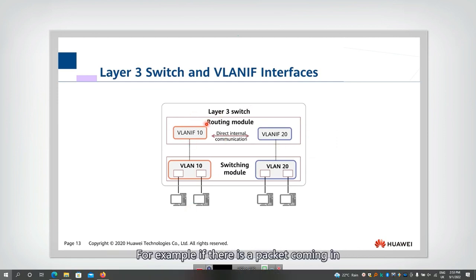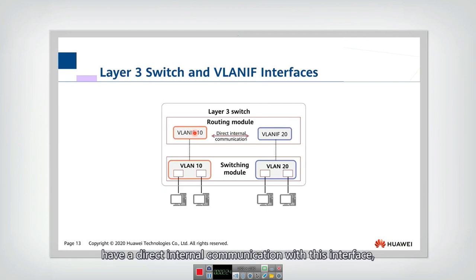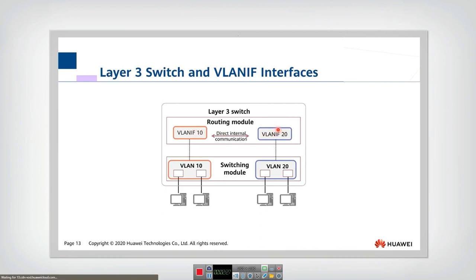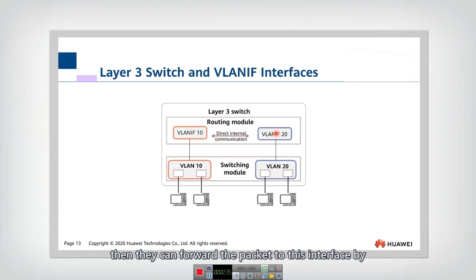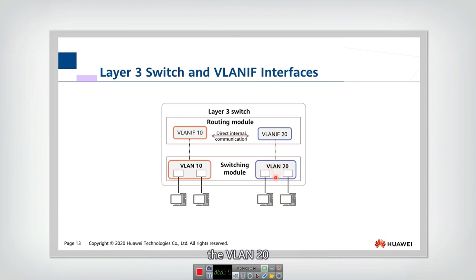For example, if a packet comes in, it should be forwarded to this virtual interface. Because this virtual interface has direct internal communication with the other interface, if the routing finds that the outgoing interface should be the VLAN 20 interface, it can forward the packet via this internal communication. Then that interface finds the packet is destined to a PC in VLAN 20, and sends the packet through VLAN 20 to PC2. So the packet transmission is achieved.